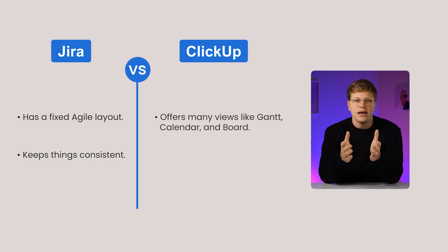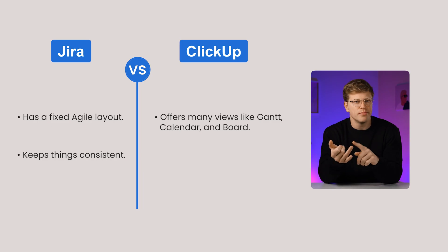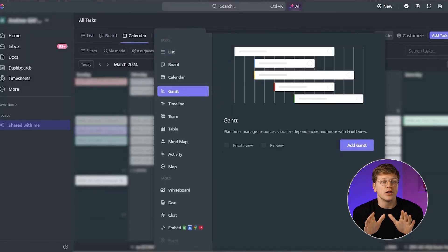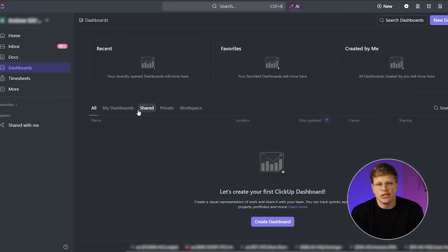ClickUp, on the other hand, lets you choose from many different views, like calendars, boards, and timelines, and change colors, layouts, and dashboards. It's more flexible, but without clear rules, it can get disorganized. So the verdict is: JIRA is better if you want a steady, structured design, whereas ClickUp is better if you want more control over how everything looks and works.